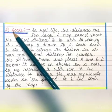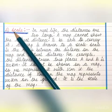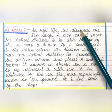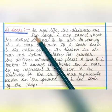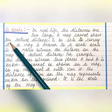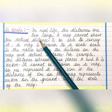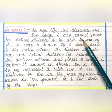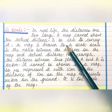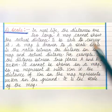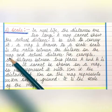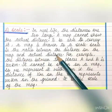The second feature of a map is scale. In real life, distances are too large and a map cannot show the actual distance. To be able to convey it, a map is drawn to a scale. Scale is the ratio between the distance on the map and the actual distance.